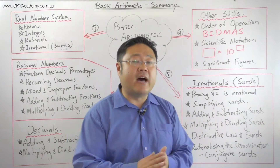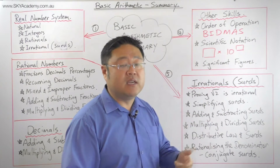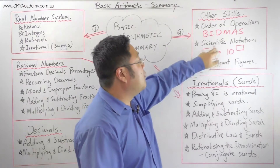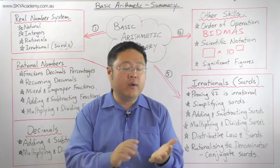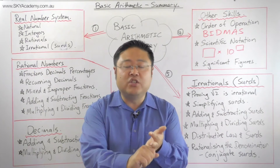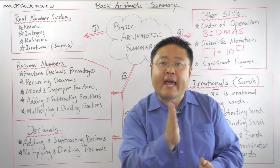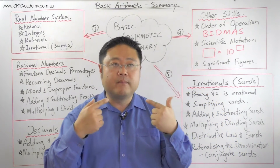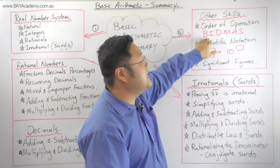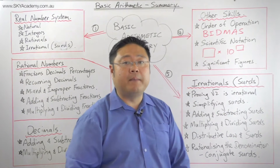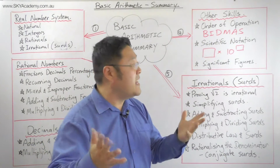We looked at significant figures, which helps when rounding numbers to a certain number of significant figures — go back and check that video if you need a refresher. We also looked at order of operations. When a calculation includes multiplication, division, addition, subtraction, brackets, and indices, the guiding principle is BIDMAS — you don't just go from left to right; you follow the steps in that acronym.